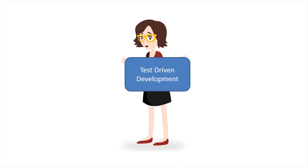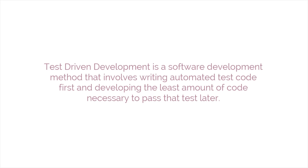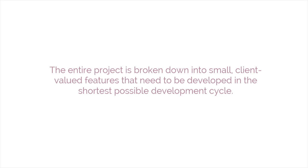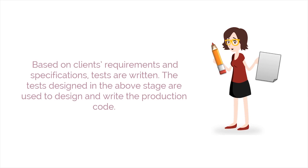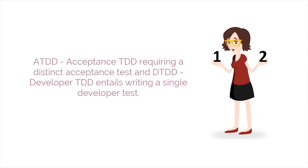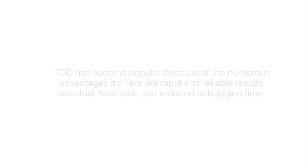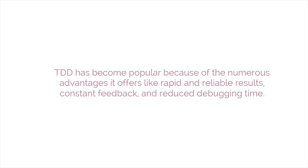The sixth method is Test-Driven Development. TDD is a software development method that involves writing automated test code first and developing the least amount of code necessary to pass that test later. The entire project is broken down into small, client-valued features to be developed in the shortest possible cycle. Based on client requirements and specifications, tests are written and then used to design and write the product code. TDD can be categorized into two levels: ATDD (Acceptance TDD), requiring a distinct acceptance test, and DTDD (Developer TDD), which entails writing a single developer test. TDD has become popular due to advantages like rapid and reliable results, constant feedback, and reduced debugging time.